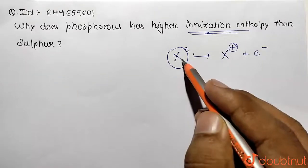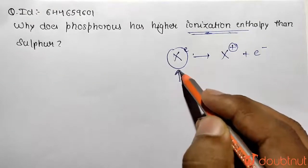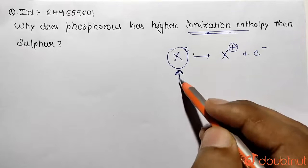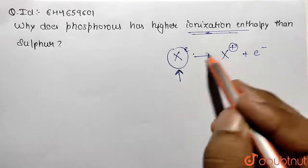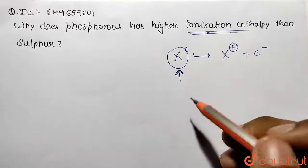So what is this? To do this process we need to apply some energy. That applied energy is going to be endothermic process and this energy required is called as the ionization enthalpy value.